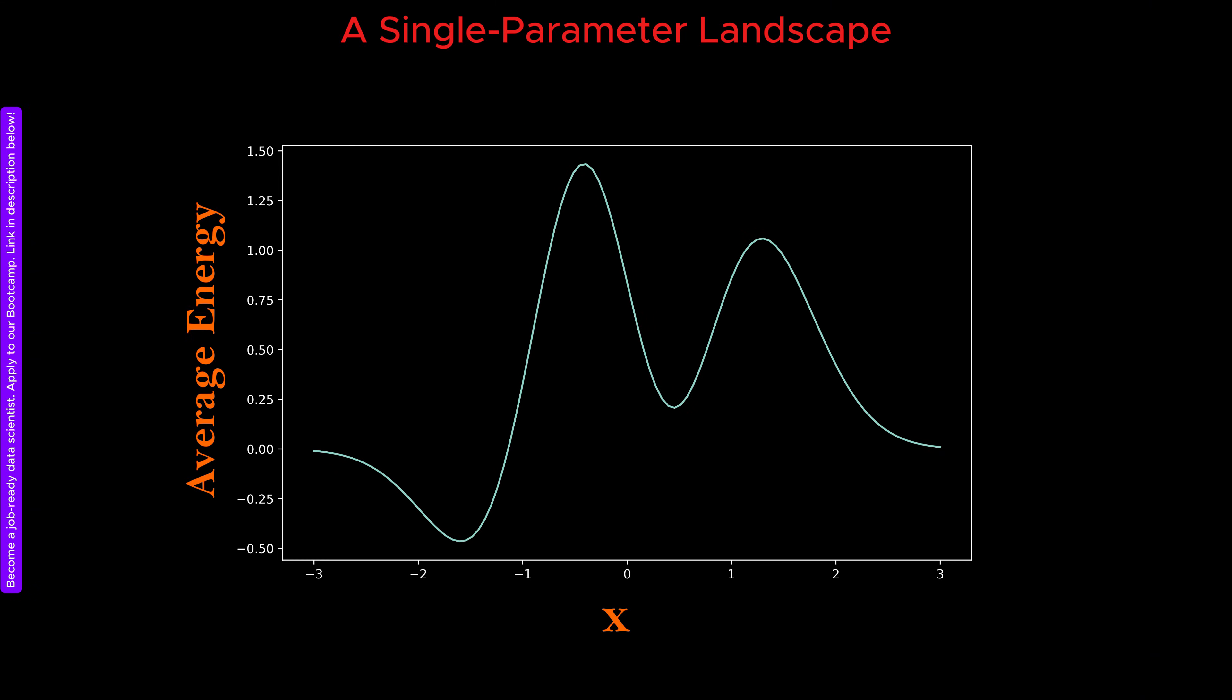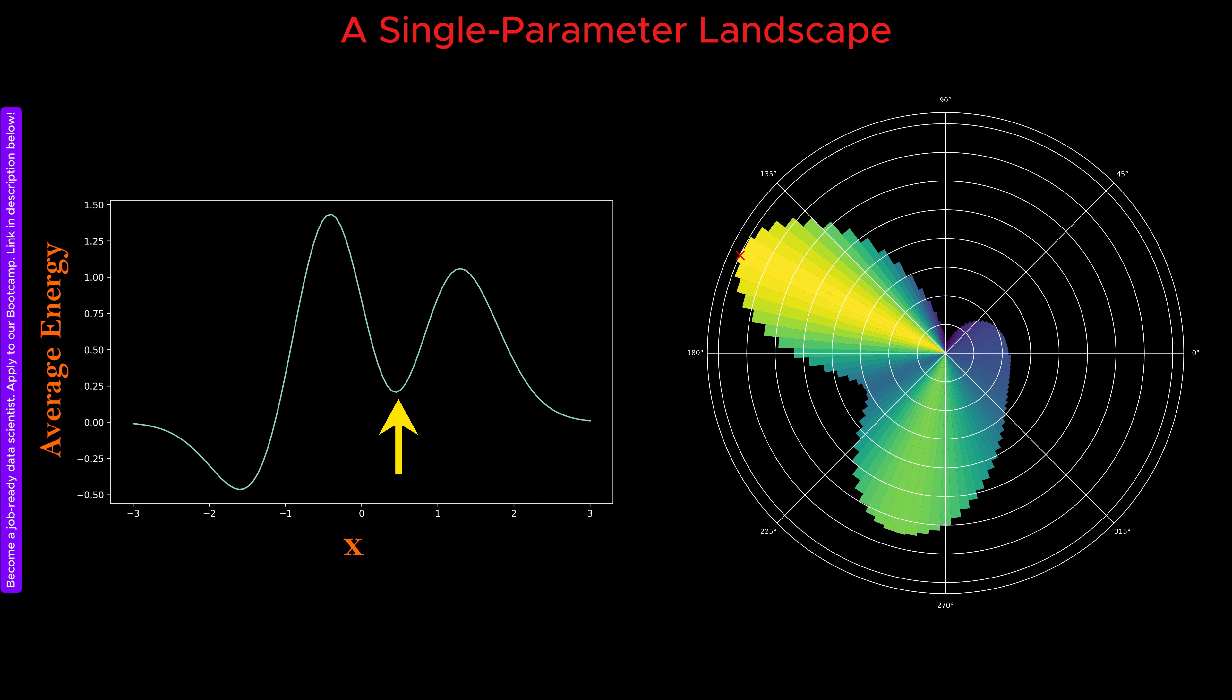This is the simplest possible scenario, where the free energy f is only a function of a single variable x. This case is extremely useful because it allows us to directly compare what we already know from conventional plots with what we see through the microscope. In the standard plot of this function, we clearly observe two maxima, with one of them being taller than the other.